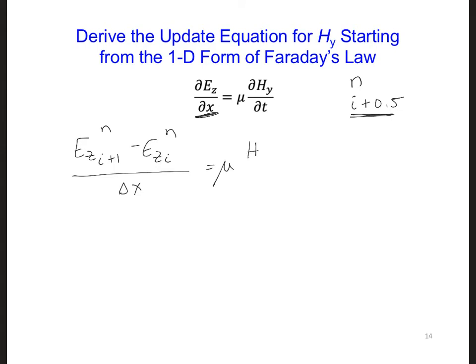And now we have the time derivative centered at n. So I'm going to take h_y, i plus 0.5, it's at the i plus 0.5 location, and a half time step into the future. So that's going to be n plus 0.5 minus h_y at the same location, but a half time step into the past, n minus 0.5, and all of that divided by delta t.